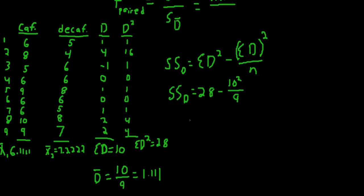which is 9. So sum of squares will be 28 minus 11.111, which will give us 16.889.